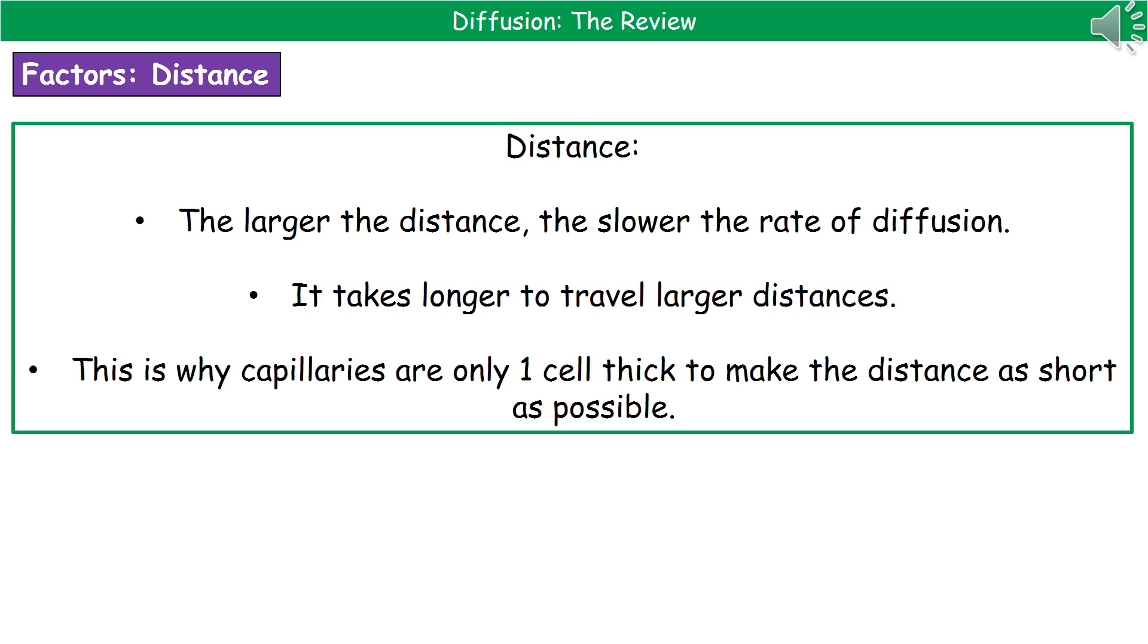If we consider the distance first of all, what we actually see is the pattern here is that the larger the distance those particles need to travel across, then the slower the rate of diffusion. Now, quite an obvious reason for this, that if you've got a larger distance, it just takes longer to get those particles across. So if we think about what happens inside the body as an adaptation,